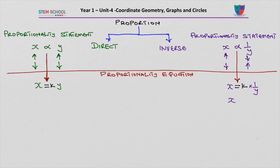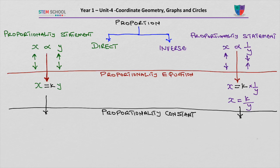So x = k/y. We can rearrange the proportionality equation to find the proportionality constant. For direct proportionality, k = x/y. For inverse proportionality, k = xy — I've multiplied both sides by y to make k the subject.